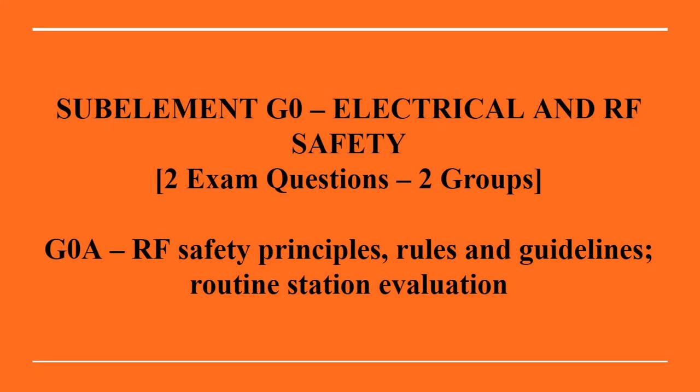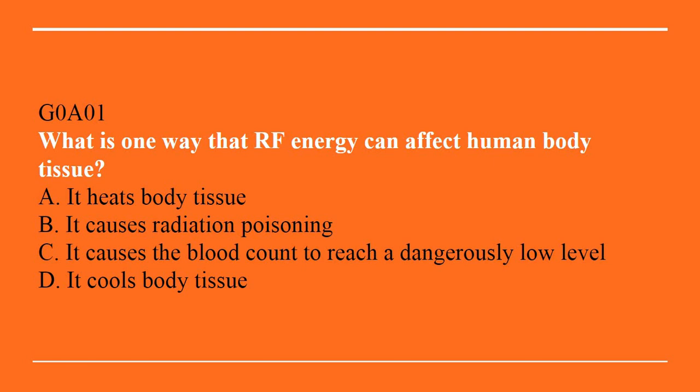Sub-element G0 covering electrical and RF safety. G0A covers RF safety principles, rules, and guidelines, as well as routine station evaluation. G0A01: What is one way that RF energy can affect human body tissues? A, it heats body tissue. B, it causes radiation poisoning. C, it causes the blood count to reach a dangerously low level. Or D, it cools body tissue. Correct answer is A — it heats body tissue.